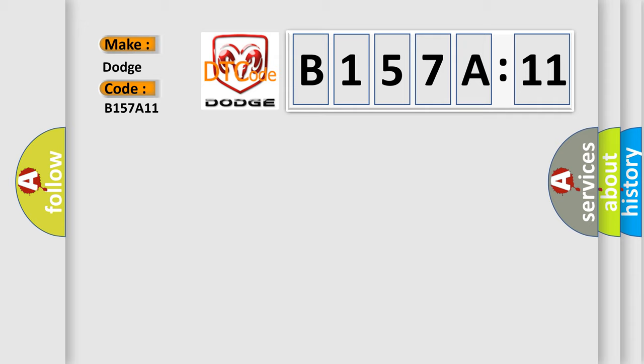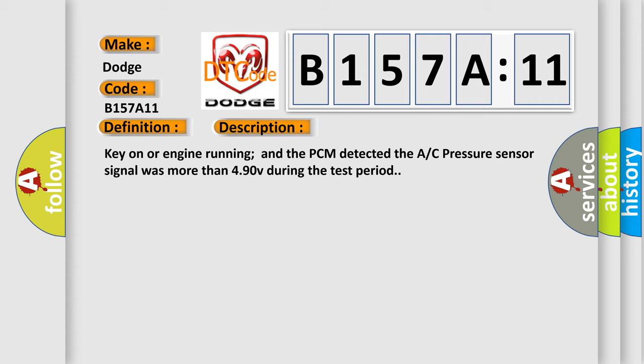The basic definition is A/C pressure sensor high input. And now this is a short description of this DTC code. Key on or engine running and the PCM detected the AC pressure sensor signal was more than 490 V during the test period.